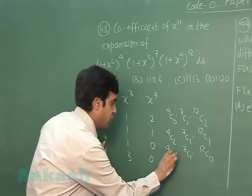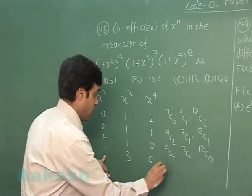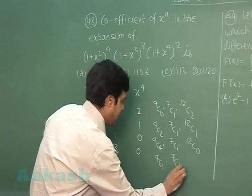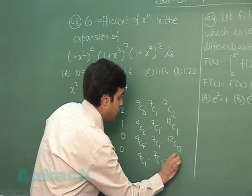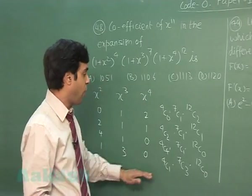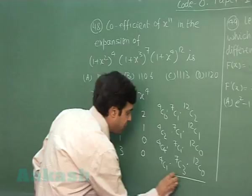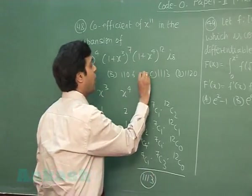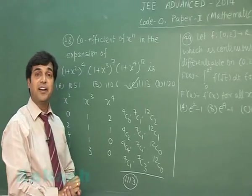This is 4C4. Next, 4C1, 7C3 and 12C0 again. Just simplify all and add to get the final result as 1113. So, required number is 1113.